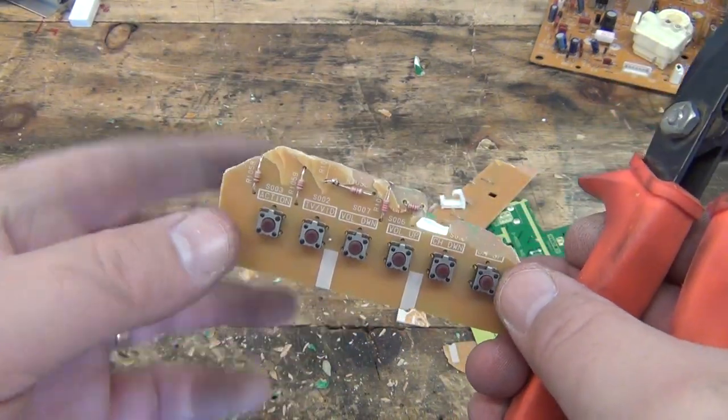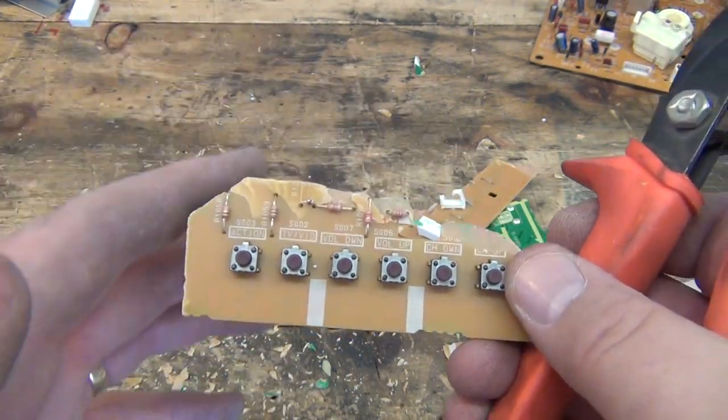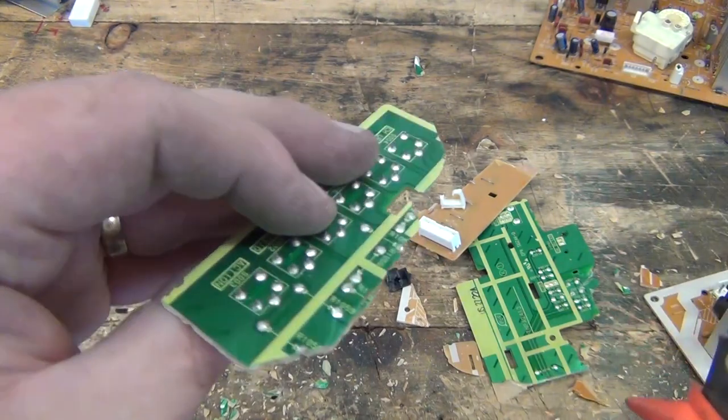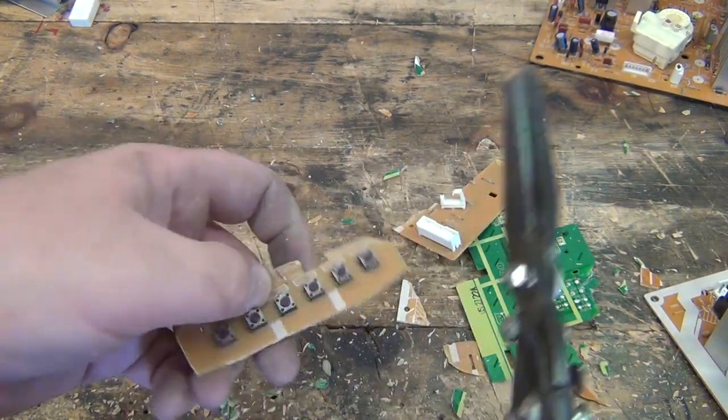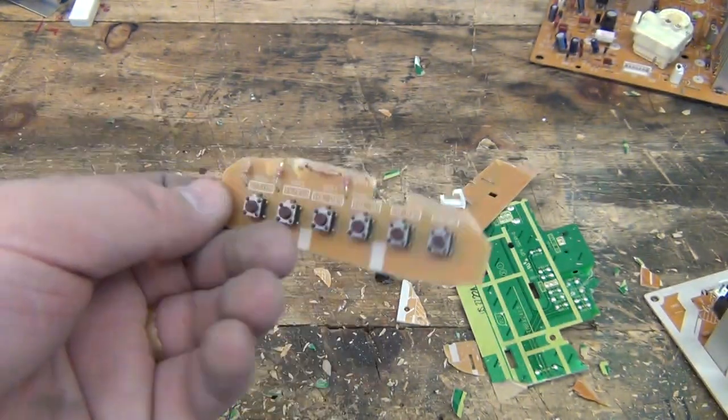These phenolic boards crack a lot more. They fracture more than, say, fiberglass. Fiberglass boards, you can shave them real clean and they don't shatter like that. There. I didn't crack the board and I made a nice little small control board I can keep.